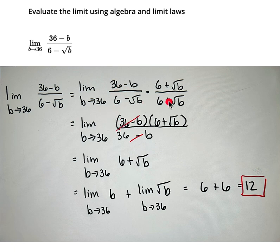So I'm going to multiply the top and the bottom by this expression by 6 plus the square root of b over 6 plus the square root of b. So we're multiplying by 1 so we're not really changing the value of this.